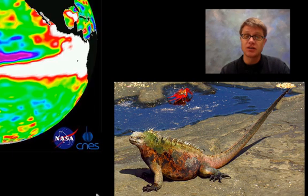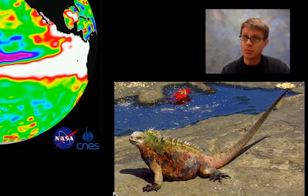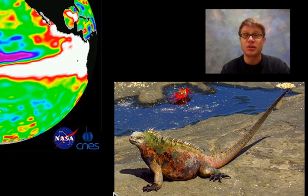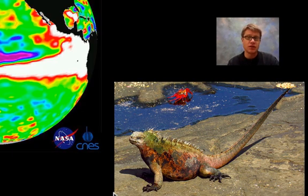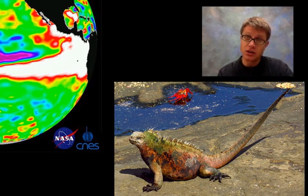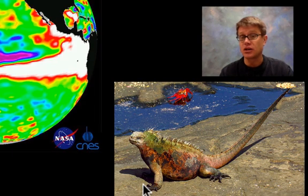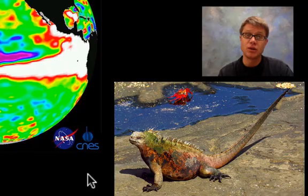Scientists found a 20% decrease in the length of iguanas during an El Niño period. There are two reasons: first, iguanas actually shrink their bodies in response — a stress hormone causes their bones to literally get shorter. Second, there's natural selection — larger iguanas must dive deeper for algae and take longer to warm up on land to digest food, creating selective pressure toward smaller body size.